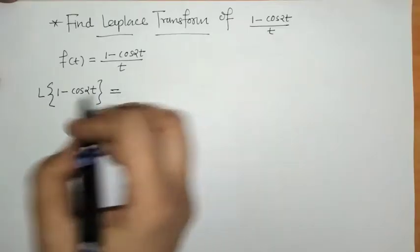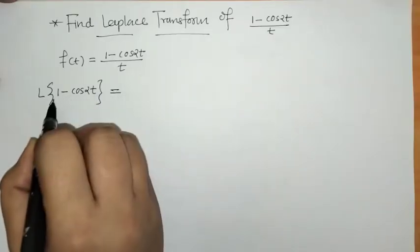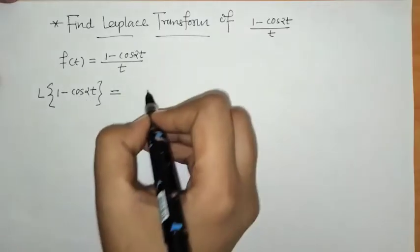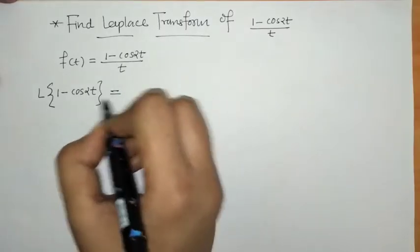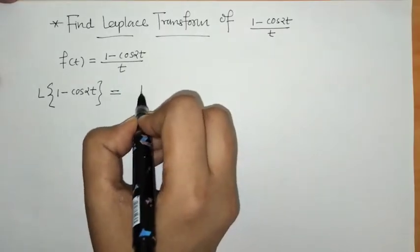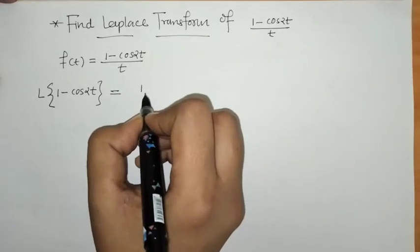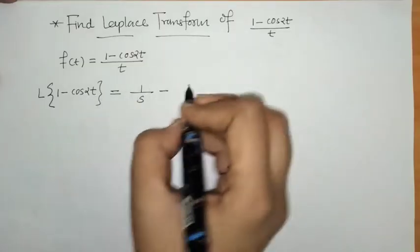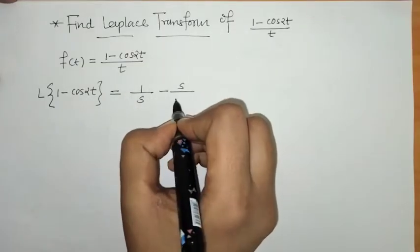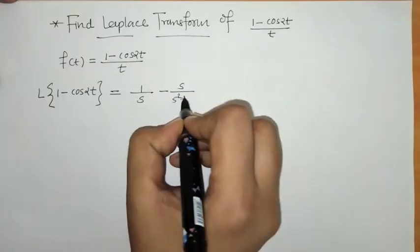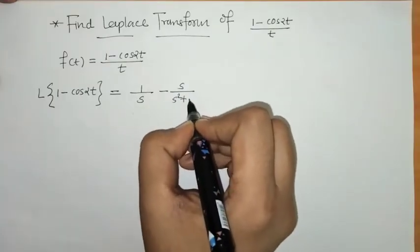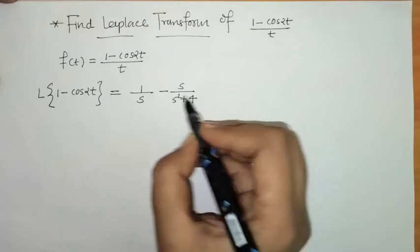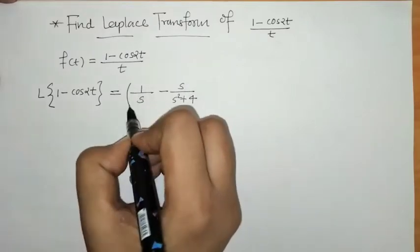We have to apply Laplace separately to 1 and cos(2t). Laplace of 1 is 1/s, and Laplace of cos(2t) is s/(s² + 2²), which is s/(s² + 4). So this is the Laplace of the numerator function.